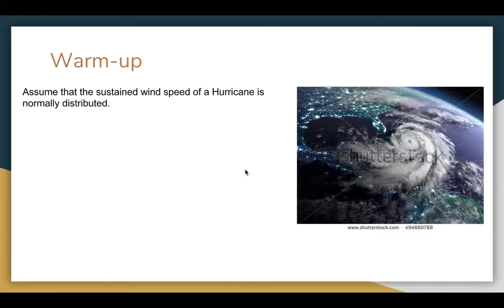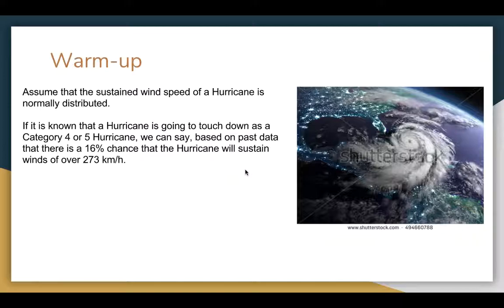So as a warm-up, we're going to assume that sustained wind speed of a hurricane is normally distributed. The problem is that I assume that Category 4 or 5 hurricanes are normally distributed, and they'd probably more likely be right skewed, more in the lower ends. But if you can overlook that fact, we can still go through the examples.